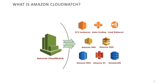What is Amazon CloudWatch? Amazon CloudWatch is a monitoring service that allows you to monitor your AWS resources and applications in real-time. You can use CloudWatch to collect and track metrics, collect and monitor log files, and set alarms to notify you when certain thresholds are exceeded.